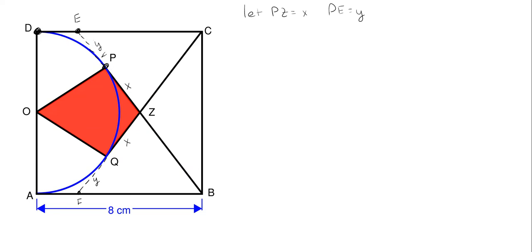The line from E to P is tangent and DE is also tangent, so using the tangent line theorem, since EP is y, the value DE up here will also be y. The same thing applies down here for AF, because tangent lines intersecting outside the circle are equal in length. That means EC is essentially 8 minus y, and BF is also 8 minus y.